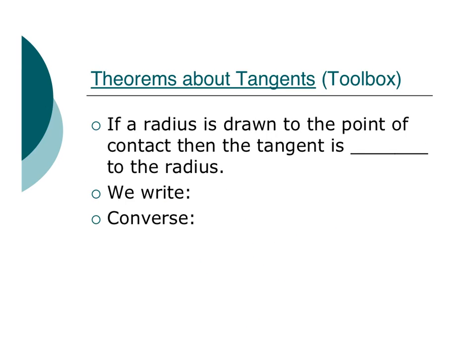An awesome theorem about tangents. If a radius is drawn to the point of contact, then the tangent is perpendicular to the radius. So let's draw this out. Here's my point of tangency, my point of contact right there. And here's the center of the circle. Now, if I were to draw my radius to that, this is perpendicular to the tangent.